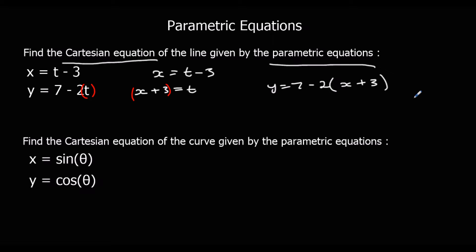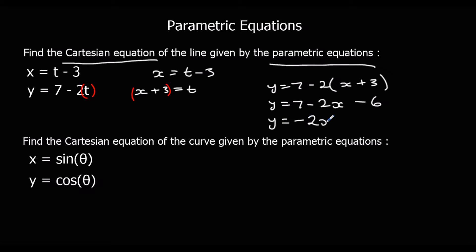That gives me y = 7 − 2(x + 3). I've now eliminated t, so I can simplify: 7 − 2x − 6 = −2x + 1. Writing it in the form y = mx + c, the Cartesian equation is y = −2x + 1.